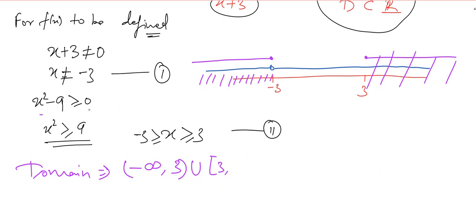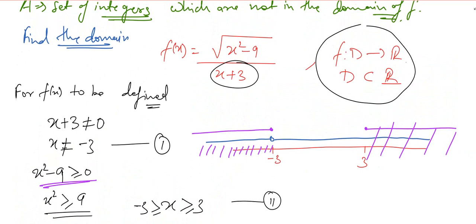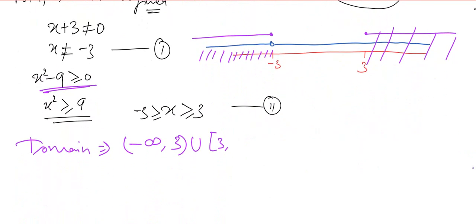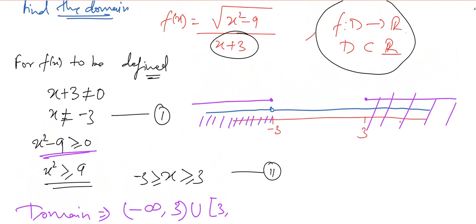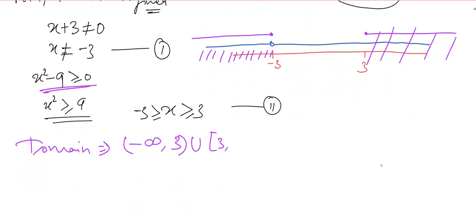The numerator can equal 0 because it won't cause any problem. But when x is equal to minus 3, the numerator will be equal to 0, and the value of x equal to minus 3 will also make the denominator 0, which is a not defined thing. That's why we are not considering minus 3 here.